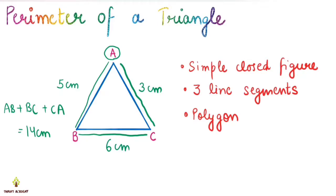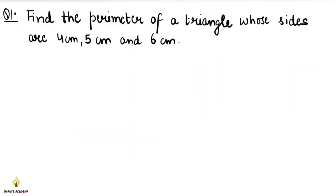Now we will solve some questions where we will find the perimeter of a triangle, and if we have the perimeter given and a side is missing, we will also find that. Question number one: find the perimeter of a triangle whose sides are 4 cm, 5 cm, and 6 cm.